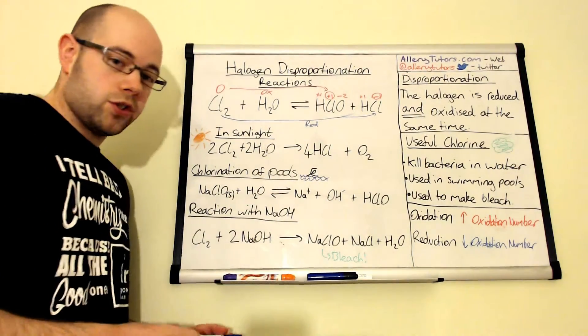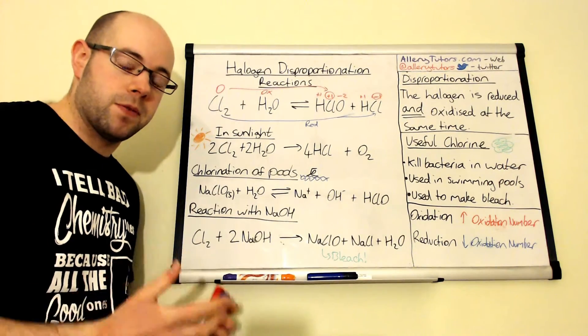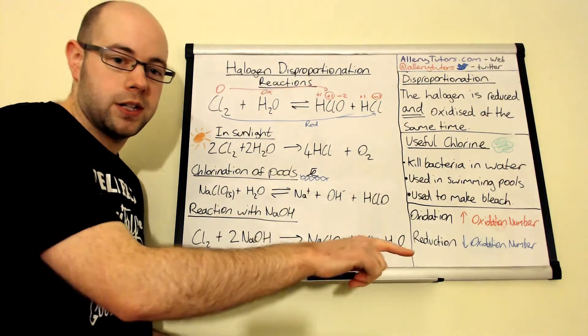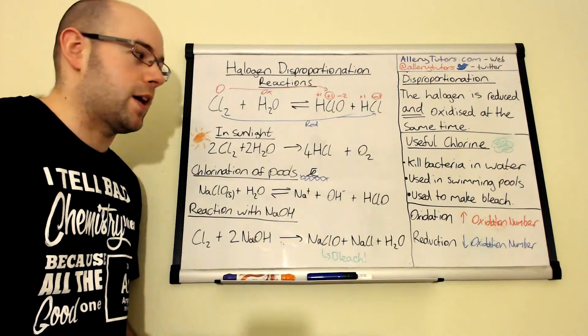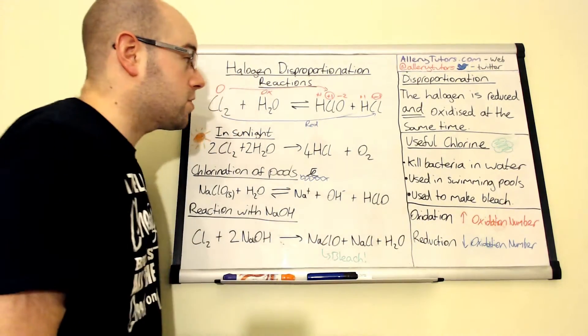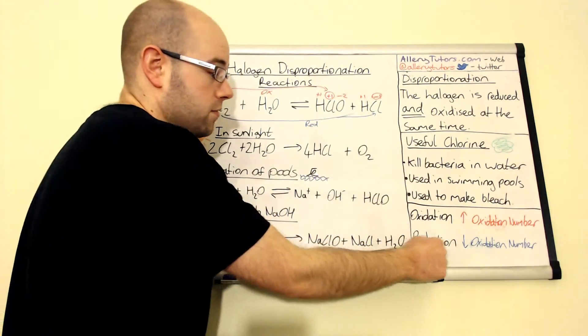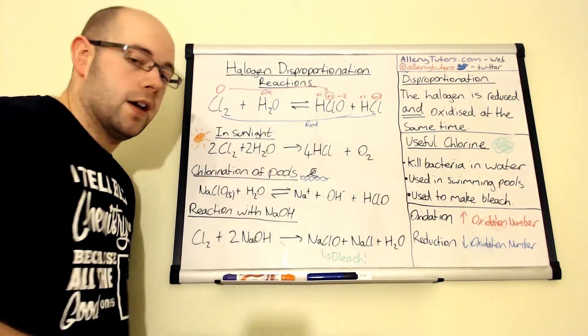Now if you're not sure on oxidation numbers or how to work out the oxidation states, there is a video that looks into that. If you just click on the link below you can have a look at that. But I've just put a brief summary on here. Basically oxidation is where we have an increase in oxidation number, like going from here to here. That's oxidation. And reduction is where we have a decrease in oxidation number.